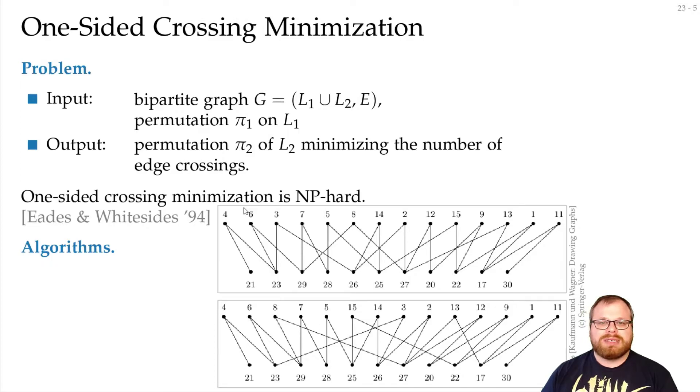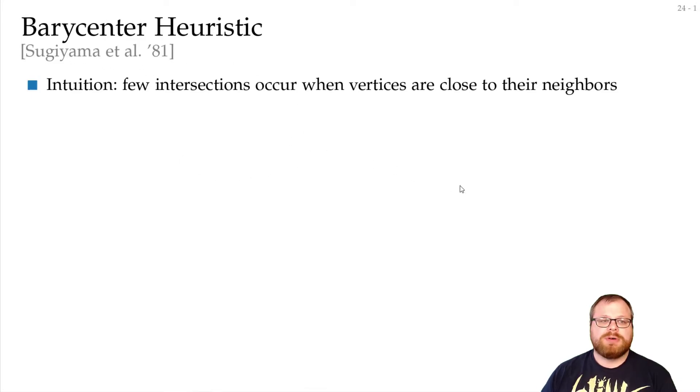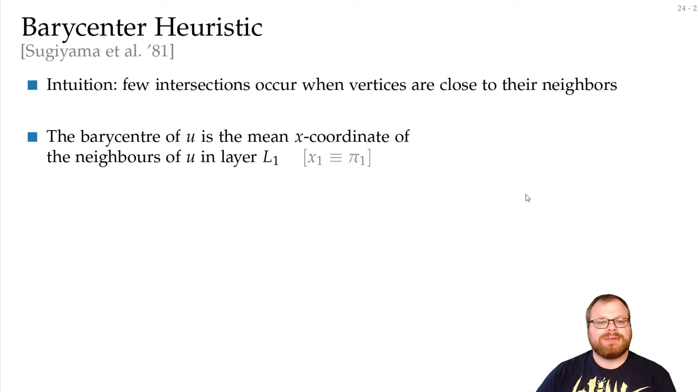However, there are many algorithms that get good solutions. There's the barycenter heuristic, the median heuristic, the greedy switch heuristic, and we can also formulate it as an ILP. Let's start with the barycenter heuristic, which was proposed by Sugiyama et al. The intuition is we have few intersections when vertices are close to their neighbors. We want to place every vertex at the barycenter of its neighbors.